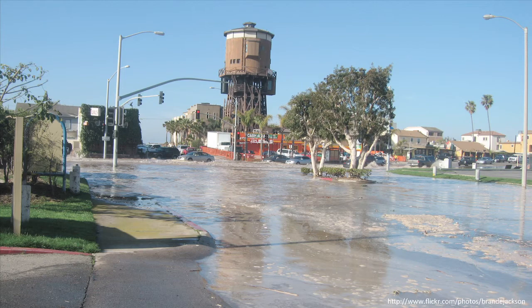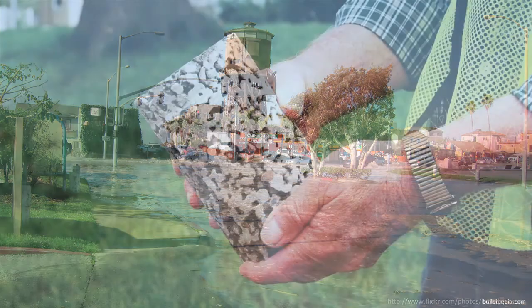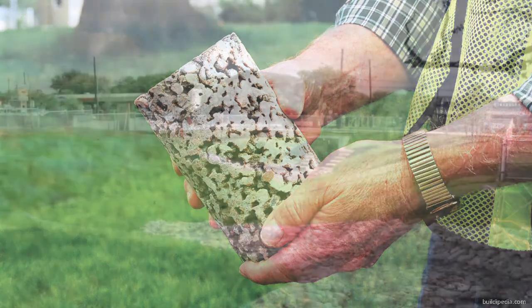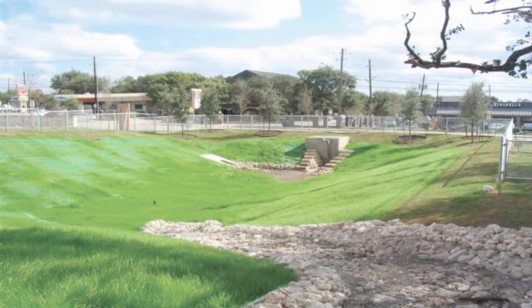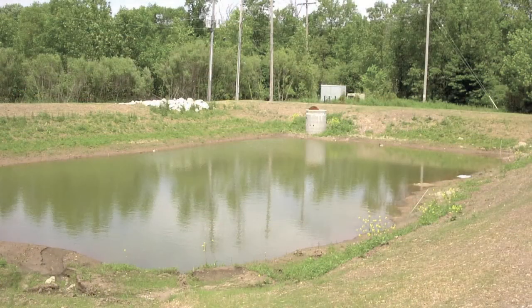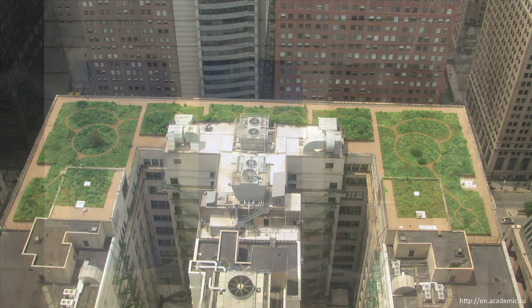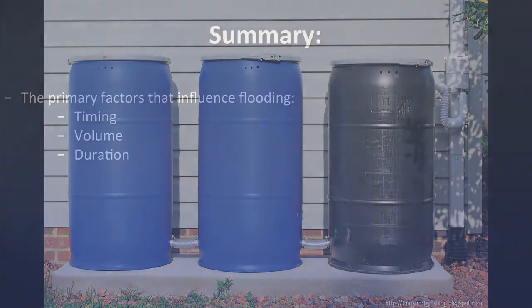Some cities have taken steps to reduce these impacts. Porous pavement materials have been developed that allow some water to pass through and infiltrate into the sand and soil below. Storm runoff can be routed to artificial basins that retain water and allow it to soak in or evaporate. Other green practices that affect infiltration rates by holding runoff longer on the site where it falls include green roofs, rain gardens, and rain barrels.